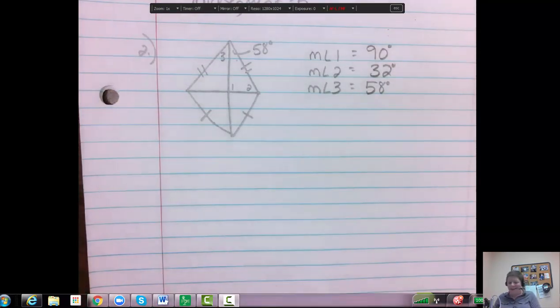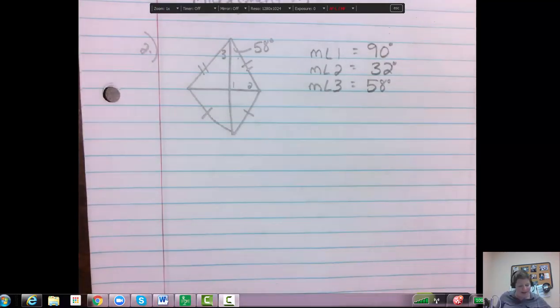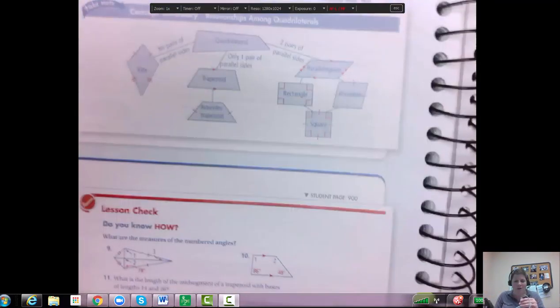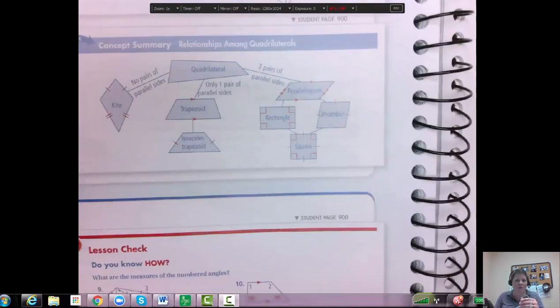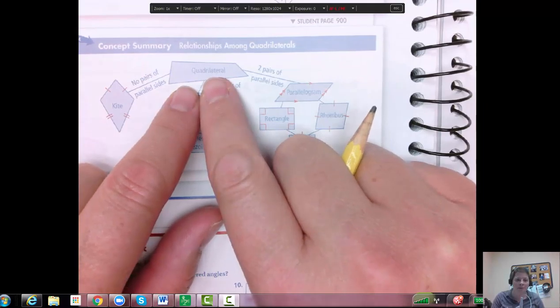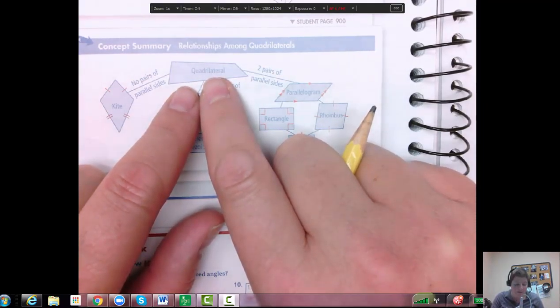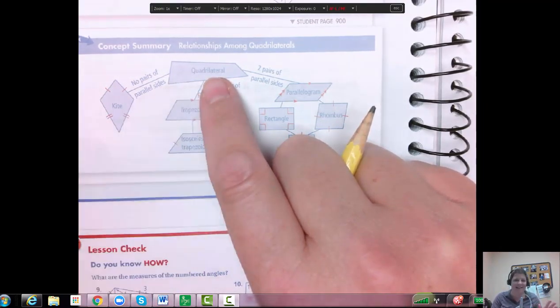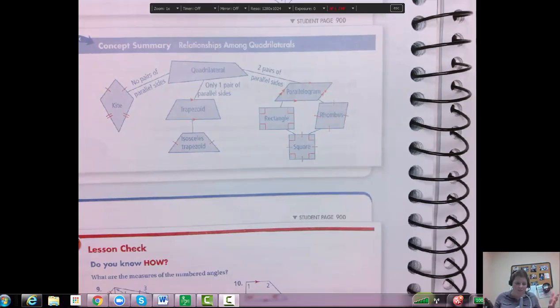So let's look then. That's the type of problem we're going to see with a kite. Let's look at this little diagram in the book. This is our relationships for quadrilaterals. So what do we have to be to be a quadrilateral? We have to be four sides. That's it. And that's what this whole chapter is on, four sides.